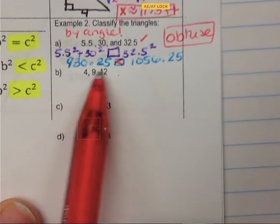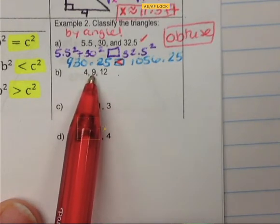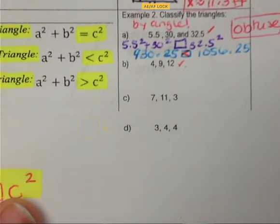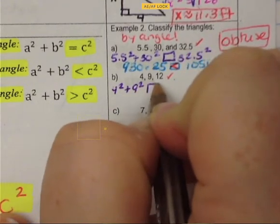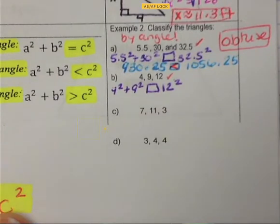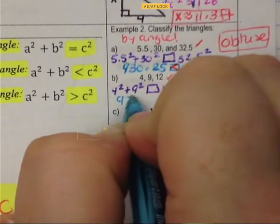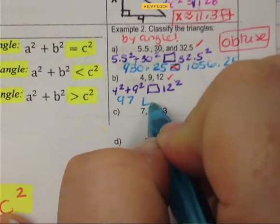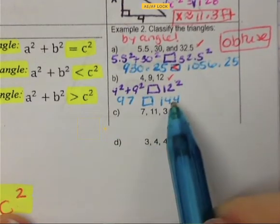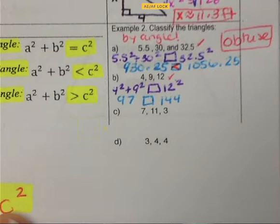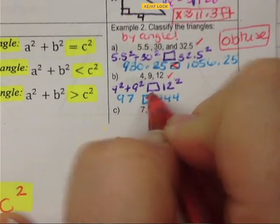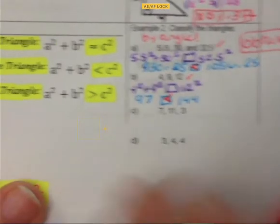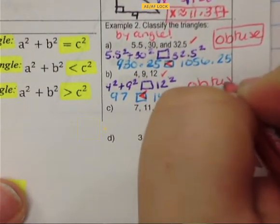Example B: first check if it's a triangle. The two smaller sides are 4 and 9. 4 plus 9 is 13, which is bigger than 12 — check mark. Now: 4 squared plus 9 squared equals 16 plus 81, which is 97. And 12 squared is 144. Since C squared (144) is bigger than A squared plus B squared (97), this is an obtuse triangle.